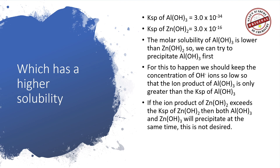The condition for precipitation is that the ion product must be greater than the solubility product. By looking at the molar solubility, the ion product of aluminum hydroxide needs to be only a very small number to trigger precipitation. Zinc hydroxide, on the other hand, requires a higher ion product. Therefore, we must keep the hydroxide ion concentration very low to precipitate aluminum, and higher to precipitate zinc as zinc hydroxide.